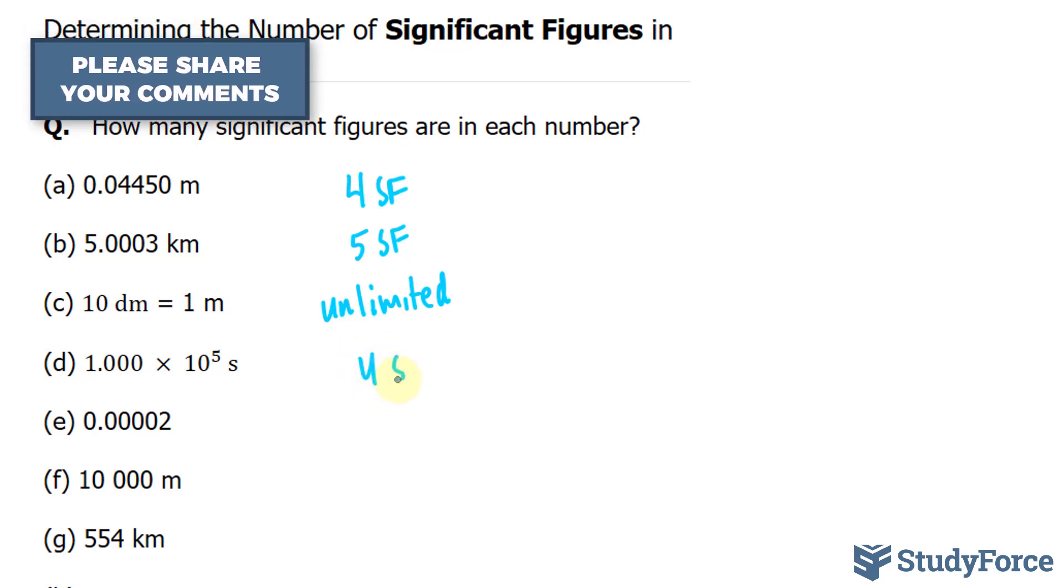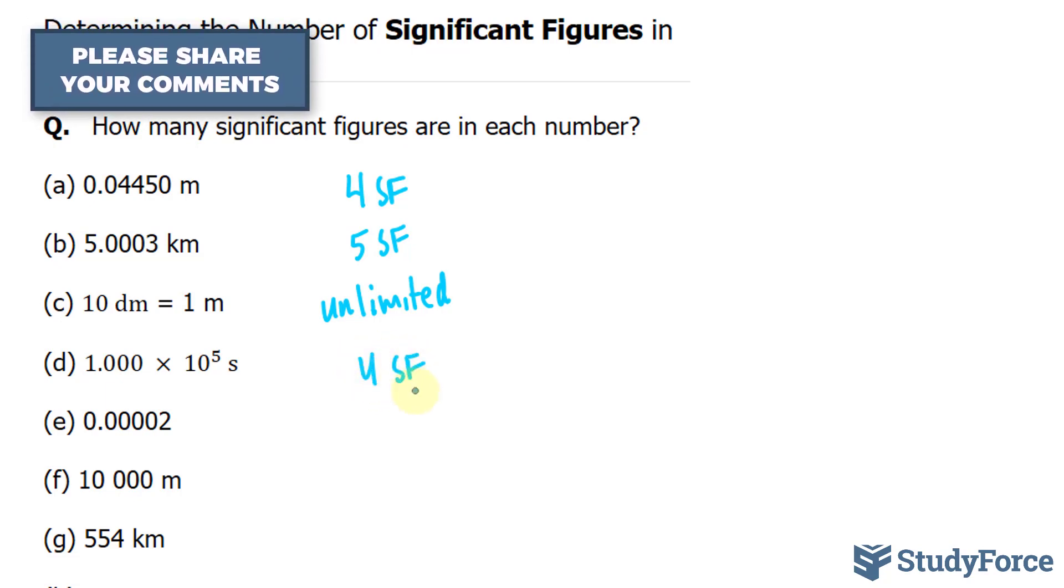Keep in mind that the trailing zeros are after a decimal point and are significant. Otherwise they wouldn't be written. Why would you want to write three extra zeros if they're not important?